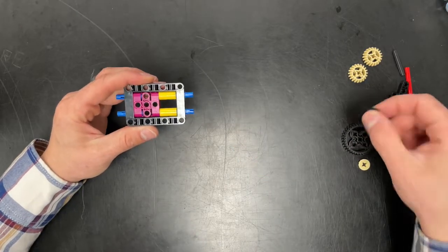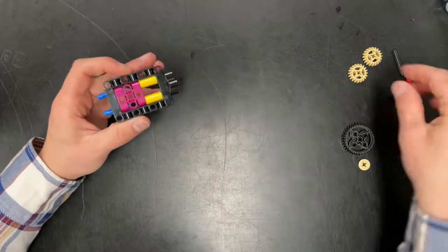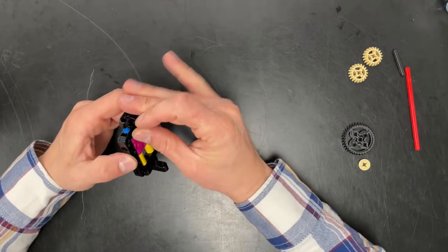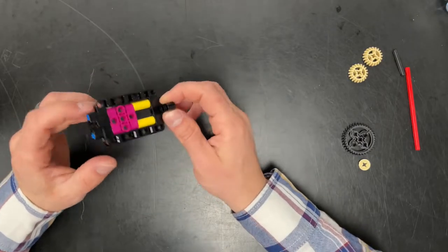Next, I'm going to take some three by three T's and I'm going to put them on those blue pegs that are coming out. Again, yours could be yellow or gray or whatever color. Mine just happened to be black. That's what I picked up out of the bin.